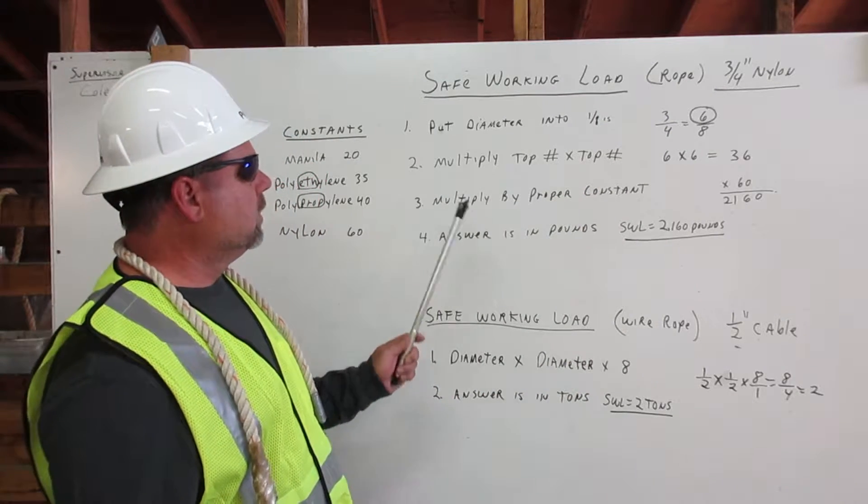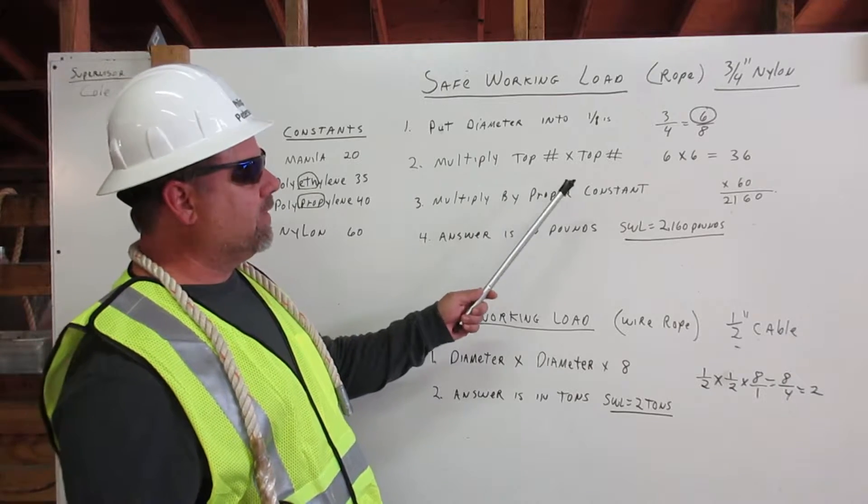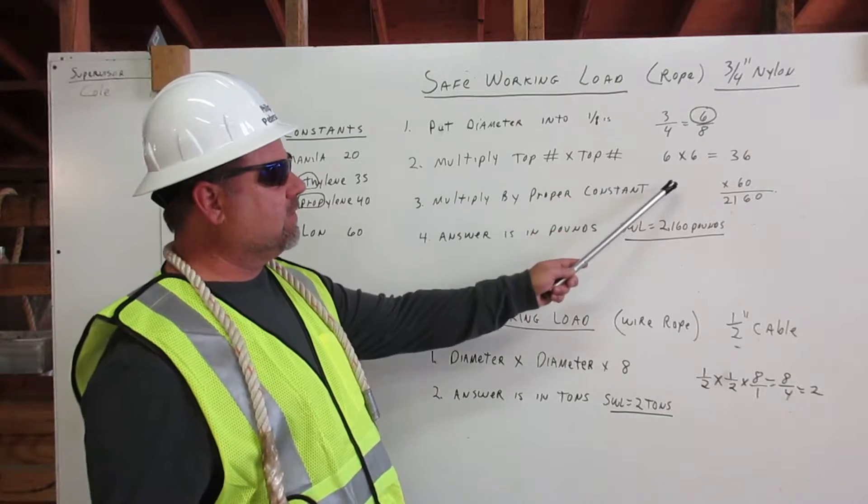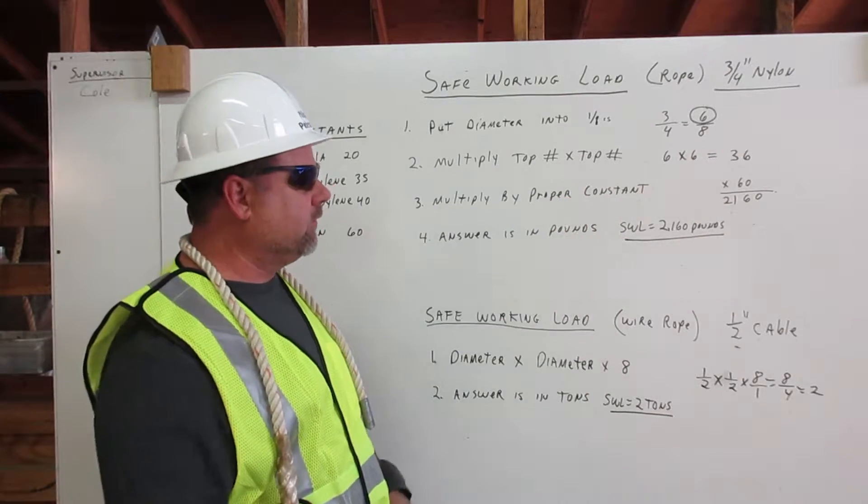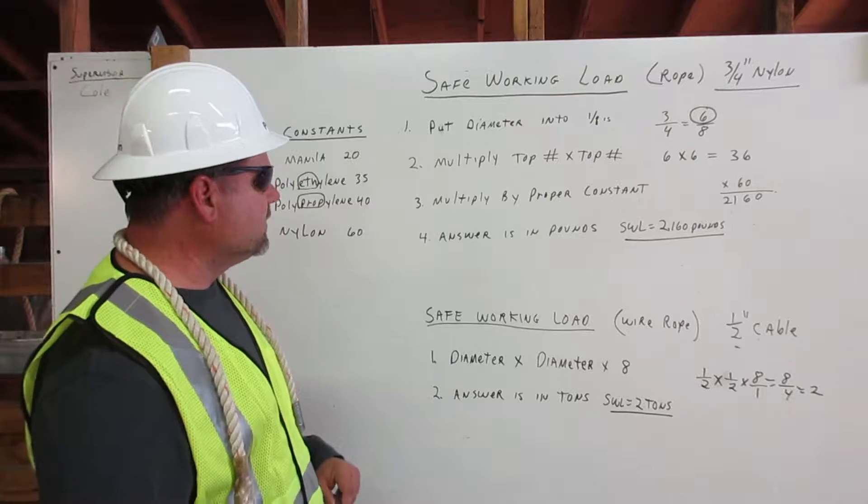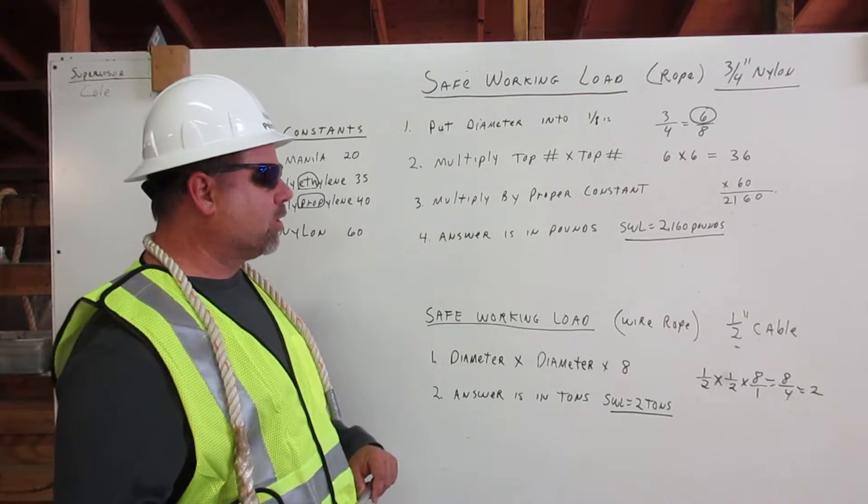Number two, multiply the top number by the top number. Six times six equals thirty-six. The third step is multiply by the proper constant.